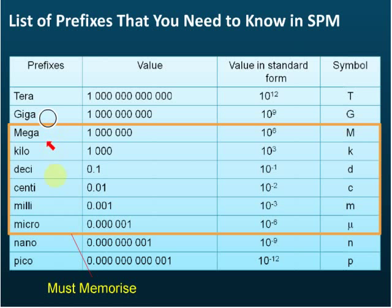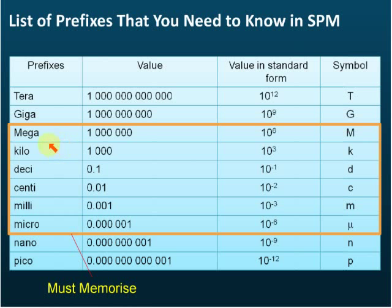Tera, giga, nano, and pico seldom come out in exams — I can't guarantee they won't, but they're rare. Mega, kilo, desi, centi, milli, and micro are very important because these are the prefixes we always use and that appear in other topics and chapters as well. Make sure you memorize these six.